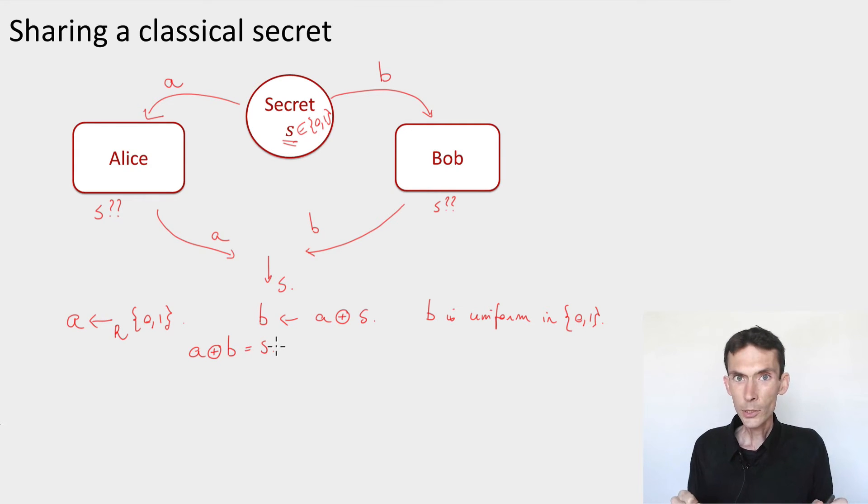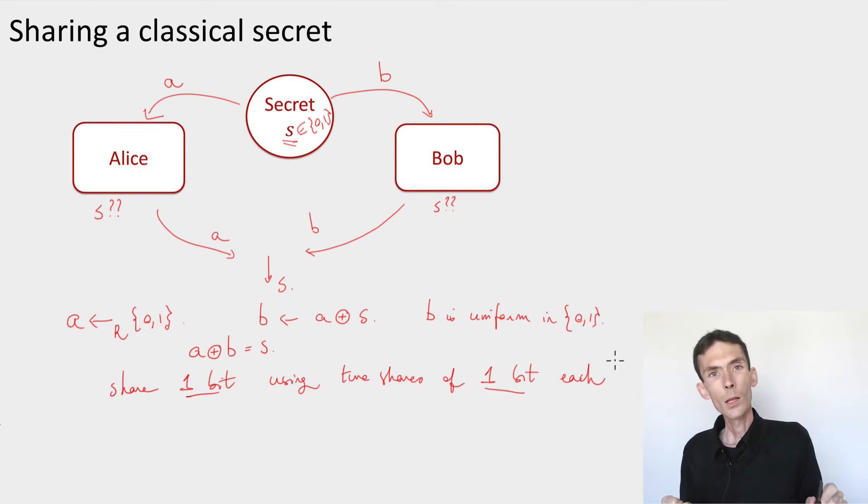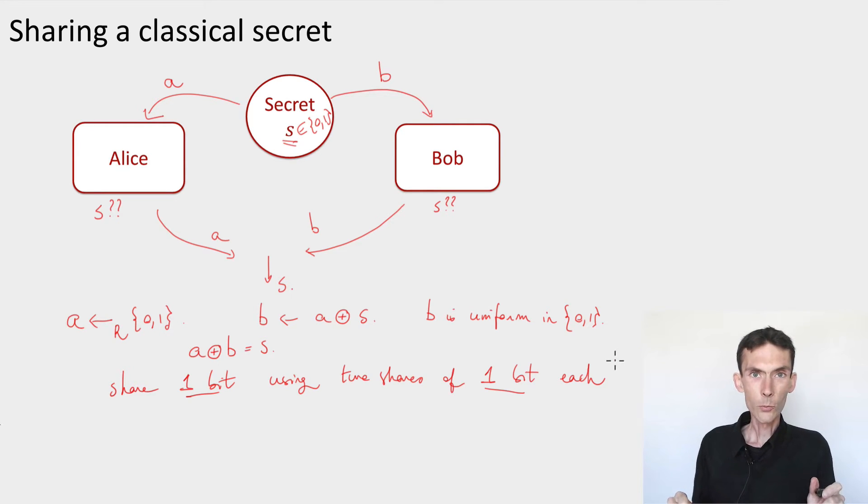So that's a classical secret sharing scheme. It works. It's perfectly secure. And it has the property that we're able to share one bit using two shares of one bit each. And so now what we're going to see is that you can do better using quantum states.